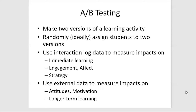In A-B testing, we make two versions of a learning activity. We randomly — ideally randomly — assign the students to the two versions. Then we can compare what happens in the two versions, our original and our improved version, and use interaction log data to measure impacts on immediate learning, engagement and affect, and strategy. We can also use external data to measure impacts on attitudes, motivation, longer-term learning, and longer-term outcomes.